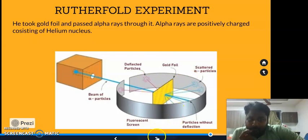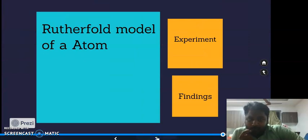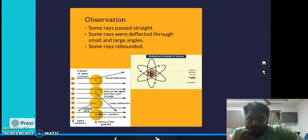These are the observations of Rutherford's experiment. The findings show that some alpha rays had small deflection, some had large deflection, and some turned back almost completely.